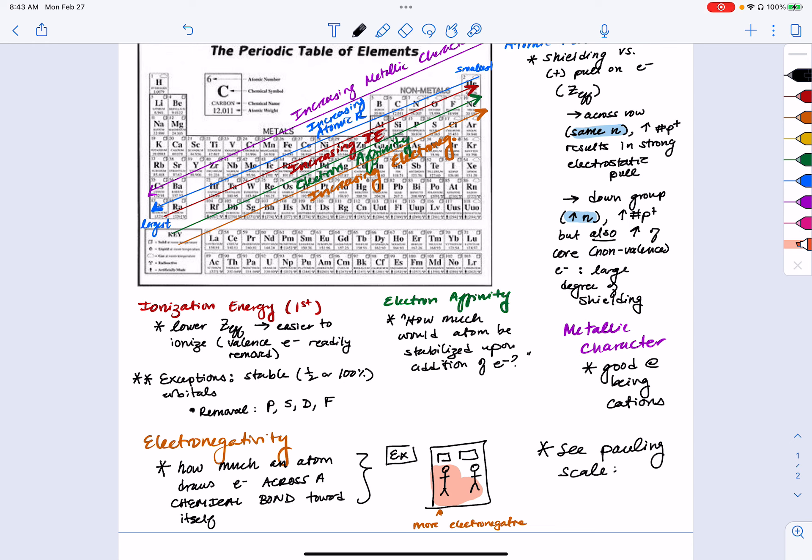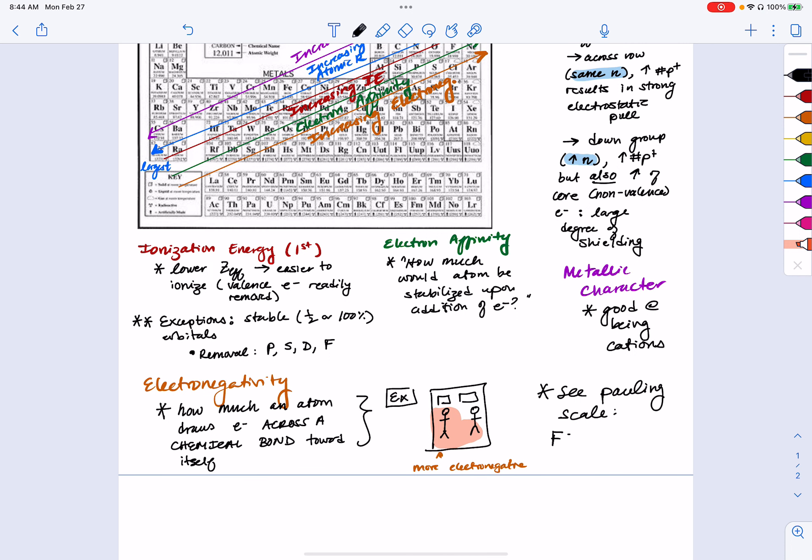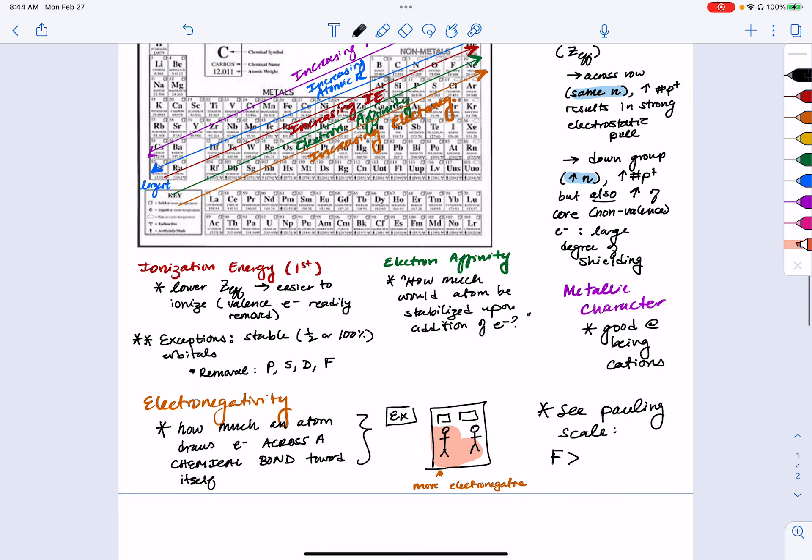But I tend to remember them just kind of by ranking. So the most electronegative is fluorine followed by oxygen which is right next to fluorine followed by nitrogen. These are all in the same row.